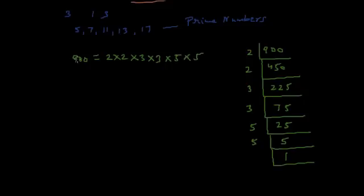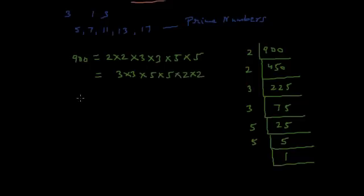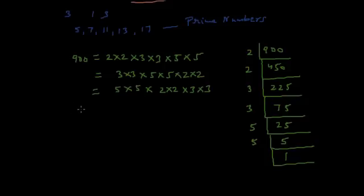This is what the fundamental theorem of arithmetic is — this positive integer has been expressed as a product of prime numbers. This factorization is unique except for the order in which the factors occur. So the order can be changed: it can be written as 3 × 3 × 5 × 5 × 2 × 2, or as 5 × 5 × 2 × 2, and so on. However, while factorizing 900, you will always have two 2s, two 3s, and two 5s.